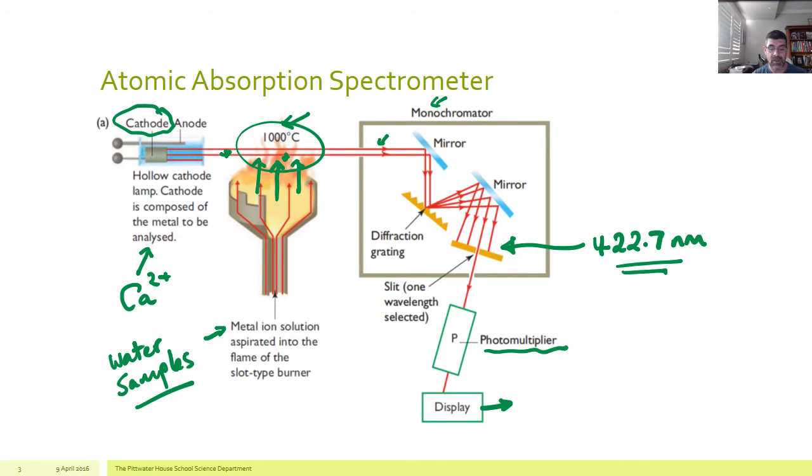So the way that most atomic absorption spectroscopy works is that we actually start with a series of known concentrations for the substance that we're looking at. So we would start with, say, a few different known concentrations of calcium solutions, and we would test them and we would find their values.